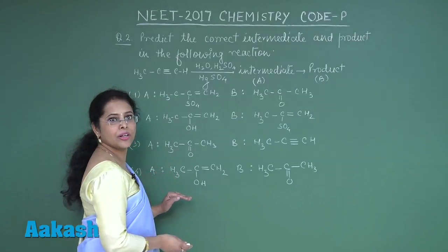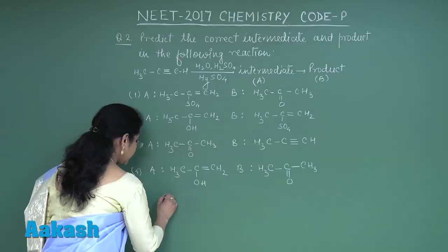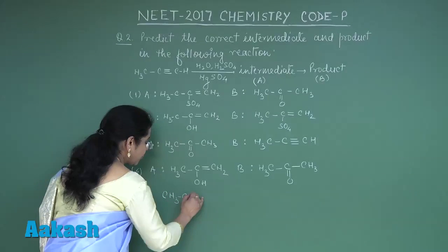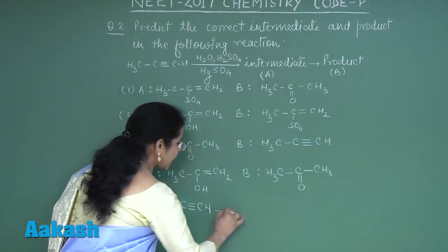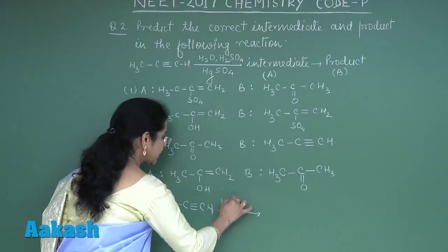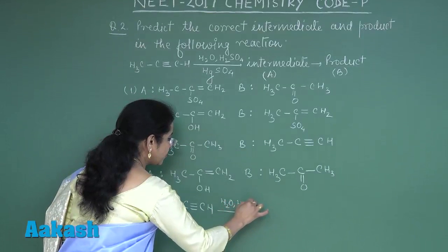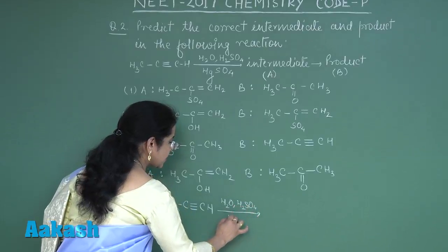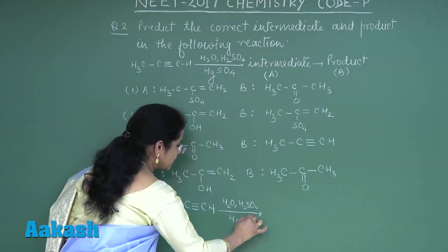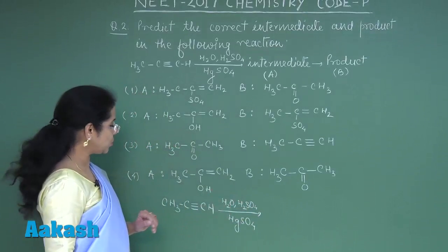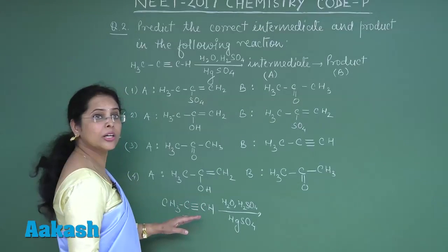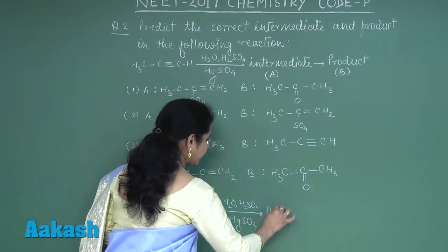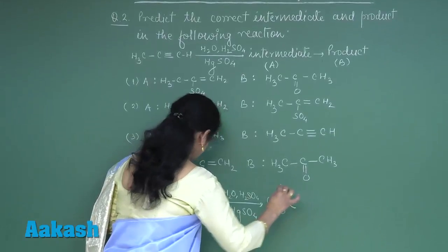Let us try this question. The first compound taken is propine. Propine reacts with water in presence of sulfuric acid and mercuric sulfate. As we know, this reaction is nucleophilic addition of water to a terminal alkyne.